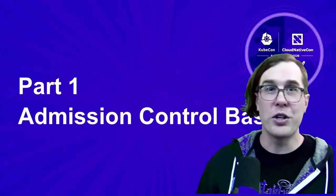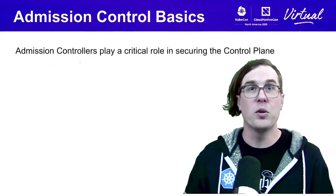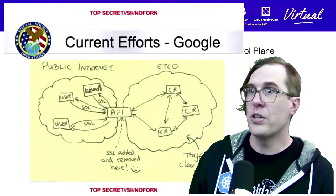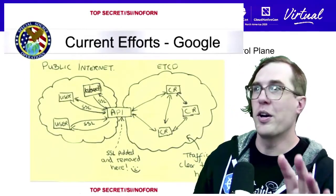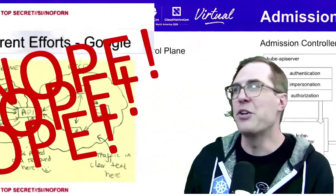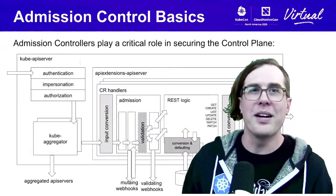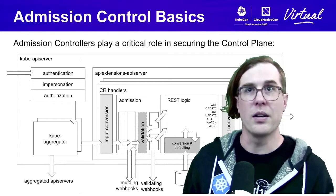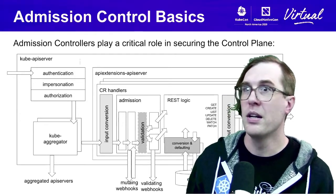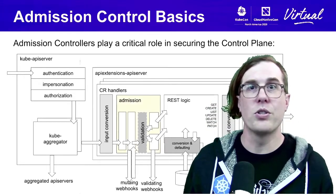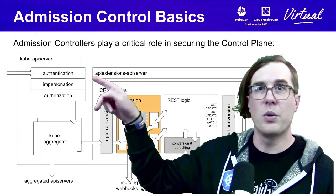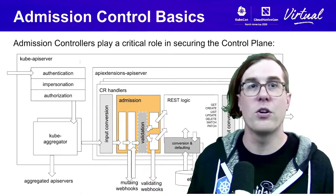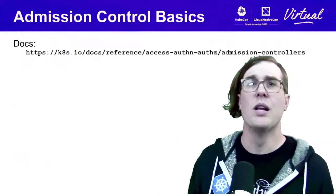First, admission control basics. Admission controllers play a critical role in securing the Kubernetes API and control plane. This diagram is a little outdated, so let me give you a more accurate API pipeline model that fits closer to what you might experience in a recent version of Kubernetes. Admission controllers will see new requests come in, go through authentication and authorization, then hit the admission control plug-ins.